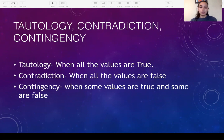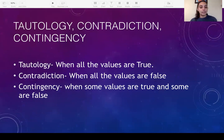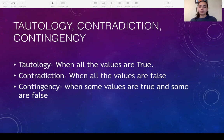A tautology is when all the values are true. After you get your answer, you look at that column — that vertical column — and you see that there are just T's going all the way down; then all those values are true and you call it a tautology. When you look at your answer and you see all F's going down, all the values are false, then it's a contradiction.